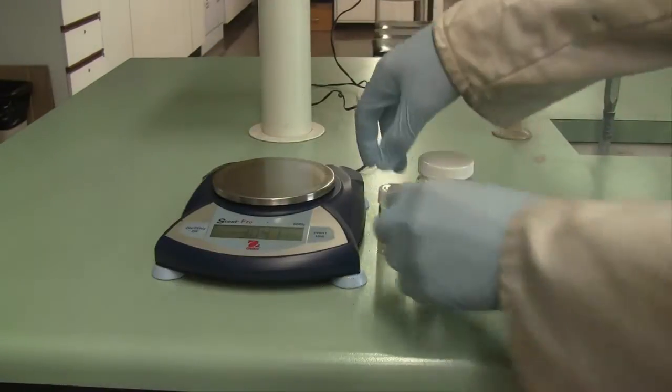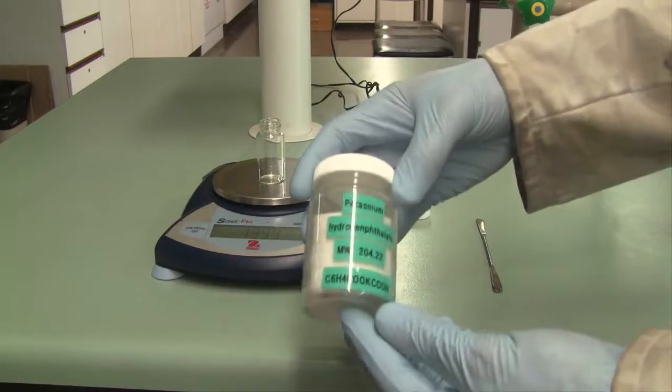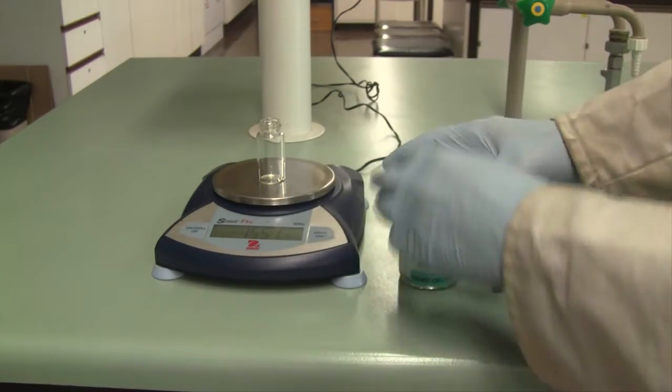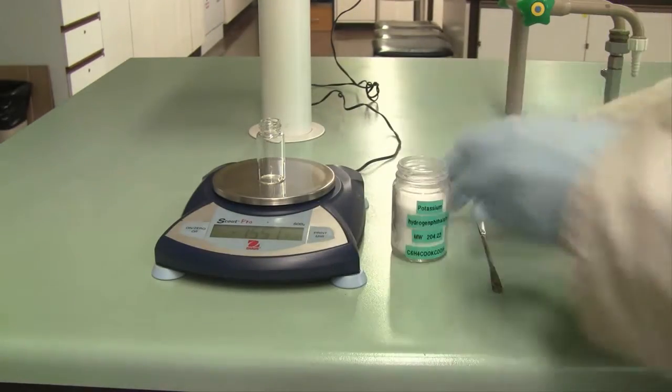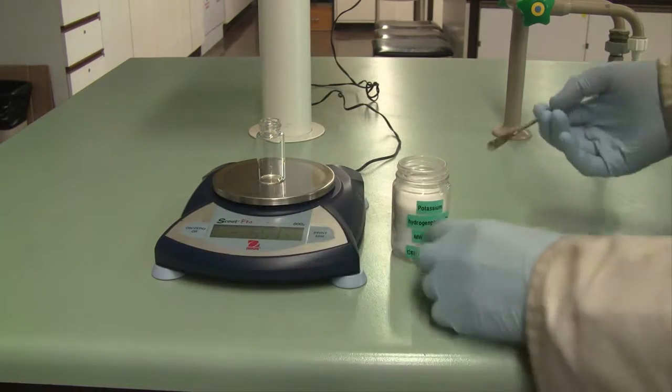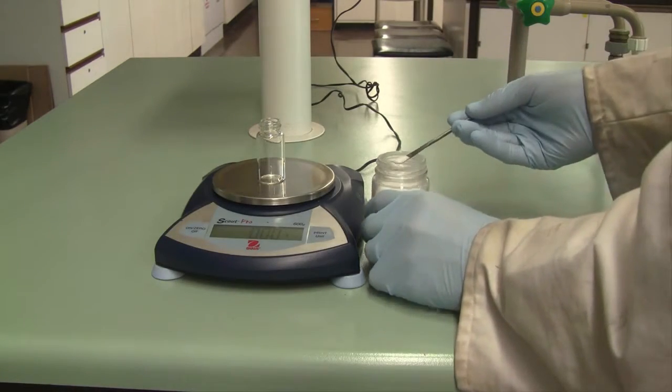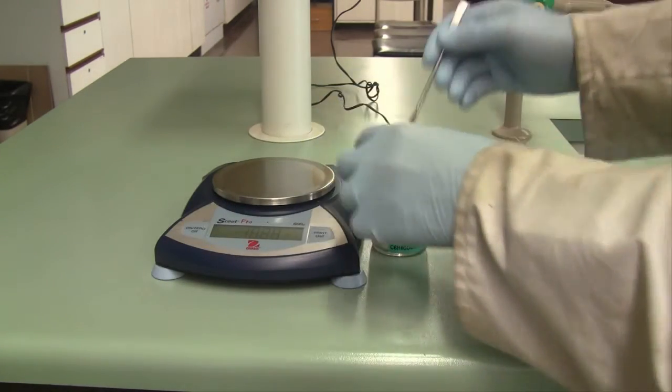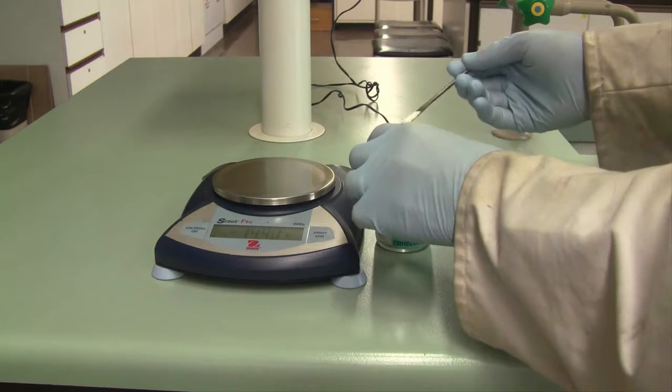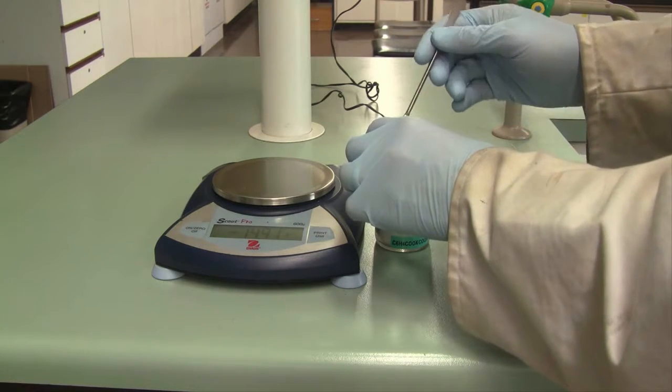Next we'll be preparing the acid solution for titration. We'll be preparing a solution of potassium hydrogen phthalate. Using a top loading balance, weigh out approximately 0.4 grams of the solid. It doesn't have to be exactly 0.4 grams, and you don't need to know the exact mass that you're adding here. We'll measure the mass accurately by weighing by difference.